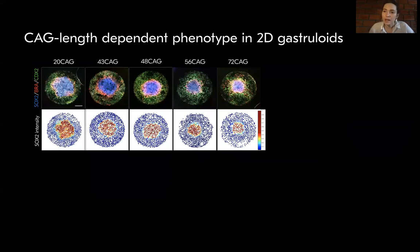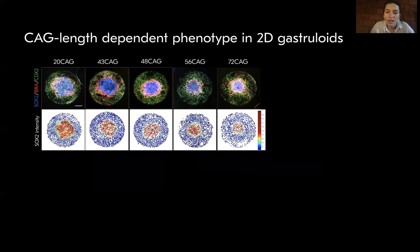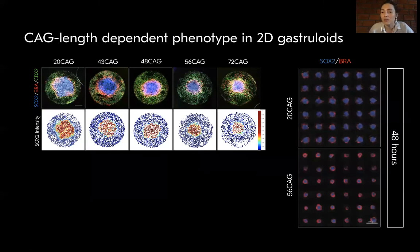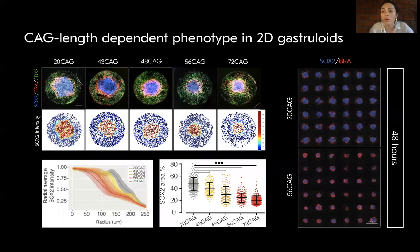When we performed this gastruloid assay with our CAG-expanded cell lines, each genotype was able to produce all three germ layers. But surprisingly, we also found a gradual reduction in the central SOX2 domain with increasing CAG lengths. This HD phenotype was highly reproducible across multiple colonies, and we could quantify a clear CAG length dependency across multiple clones in each genotype.